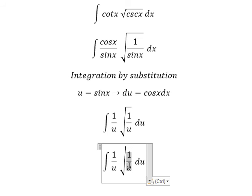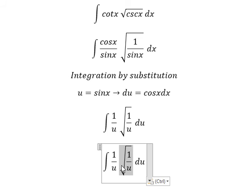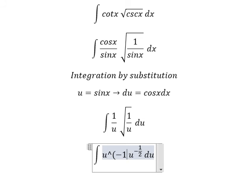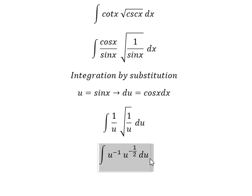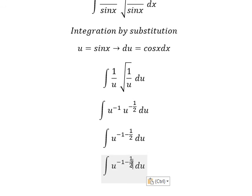This term becomes u to the power of negative one-half. This term becomes u to the power of negative one. So negative one plus negative one-half gives us negative three over two.